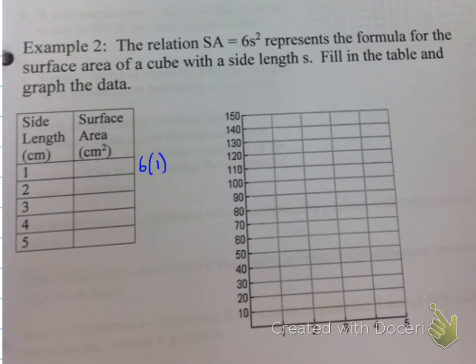Example number two says the relation SA is equal to 6S squared represents a formula for the surface area of a cube with a side length S. Fill in the table and graph the data. So what we're looking at here is, again, you're given information as part of the table, you're given a formula, and you have to fill in this part of the table to graph it.